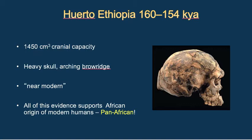Another site in East Africa at Huerto, dating to 160 to 154,000 years ago, has a fully modern brain size of 1,450 cc's but a pretty heavy skull with a large prominent brow ridge — described as 'near modern.' All of this taken together supports a pan-African model of African human origins, meaning modern humans appeared in lots of different parts of Africa at the same time. It's not just one part of Africa that is the cradle of humanity.